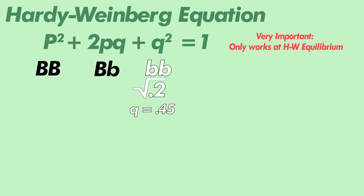Now to reveal the second equation: p + q = 1. So we have q, and p is the frequency of our dominant allele. We just solve for p and get about 0.55.